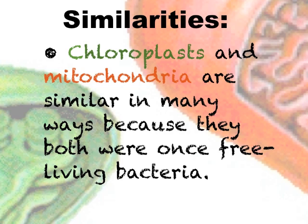Chloroplasts and mitochondria are similar in many ways because they both were once free-living bacteria. According to the endosymbiotic theory, these organelles originated as separate prokaryotic organisms that were engulfed by the host cell. They are also similar in size — on average, they both are about 5 microns in length.